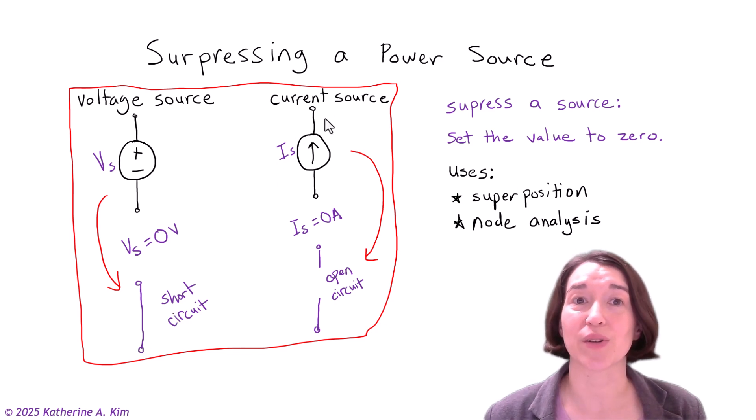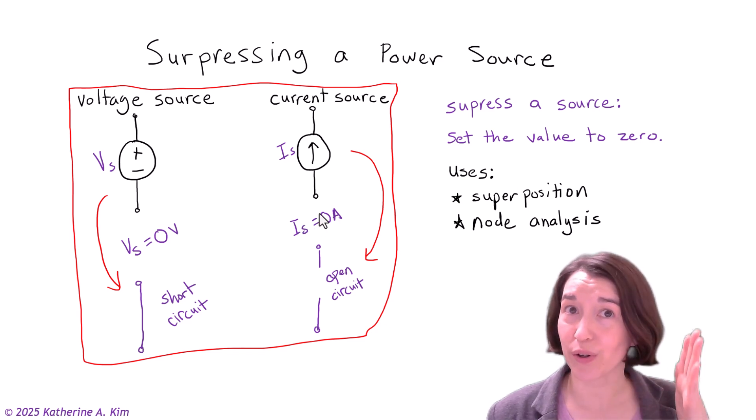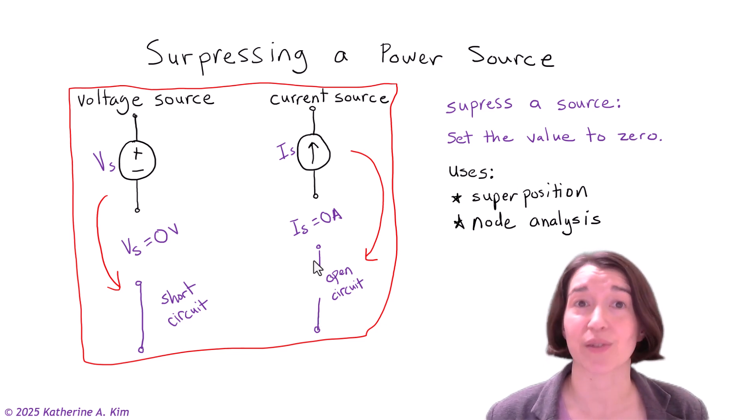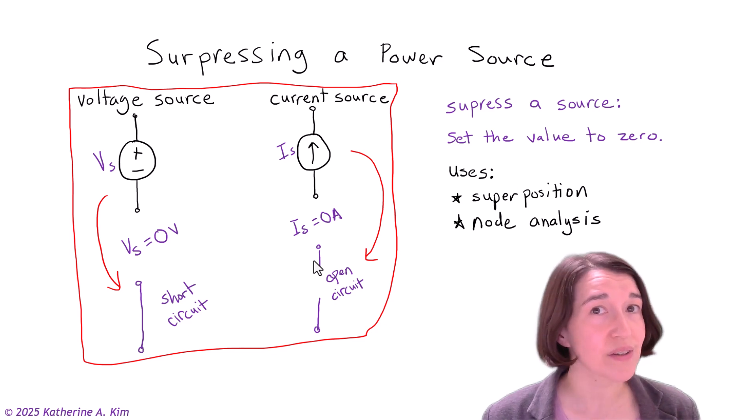If you want to suppress a current source, we set the current value to zero, which when no current flows, it's equivalent to an open circuit between the terminals. So now you know how to suppress an independent power source. But don't just go around suppressing any source you see, use your knowledge wisely.